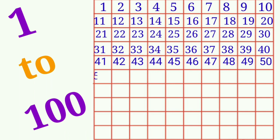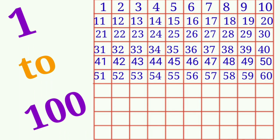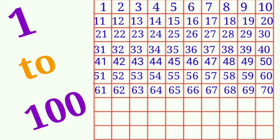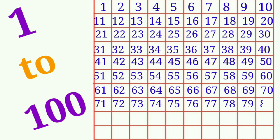Next row: 51, 52, 53, 54, 55, 56, 57, 58, 59, 60. And the next row children: 61, 62, 63, 64, 65, 66, 67, 68, 69, 70. And the next row children: 71, 72, 73, 74, 75, 76, 77, 78, 79, 80.